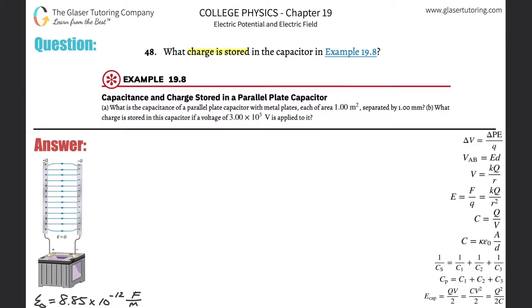Number 48: What charge is stored in the capacitor in example 19.8? The question asks about the capacitance of a parallel plate capacitor with metal plates, each of area one meter squared, separated by one millimeter. The area of the plates is one meter squared, and the distance between the two plates is one millimeter, which we need in meters, so that's 0.001 meters. The question is asking for the charge that is stored.